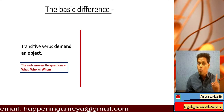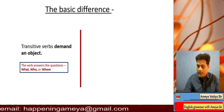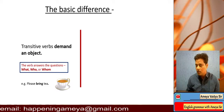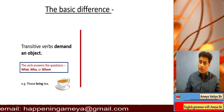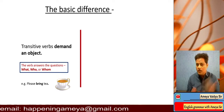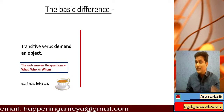It's not just 'what' — it's what, who, or whom. Let's consider an example: 'Please bring tea.' The action here is 'bring.' Now imagine you just stop at 'Please bring.' Please bring what? Tea. So therefore 'bring' is a transitive verb — it demands an object. 'Please bring tea' completes the sense.